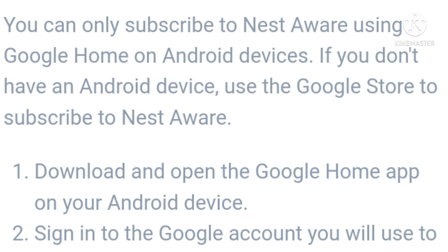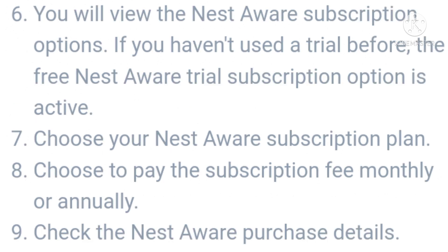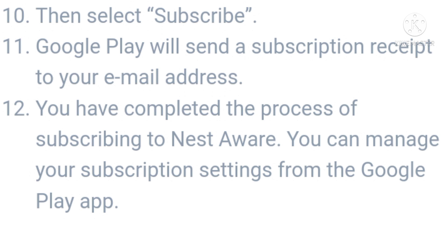Step two: sign into the Google account you will use to subscribe to Nest Aware. Step three: tap Settings on the home screen. Step four: under the features options, select Nest Aware. Step five: tap on the Subscribe option. Step six: you will view the Nest Aware subscription options. If you haven't used a trial before, the free Nest Aware trial subscription option is active. Step seven: choose your Nest Aware subscription plan. Step eight: choose to pay the subscription fee monthly or annually. Step nine: check the Nest Aware purchase details.